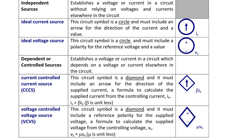Voltage controlled voltage source or VCVS. This circuit symbol is a diamond and it must include a reference polarity for the supplied voltage. A formula to calculate the supplied voltage from the controlling variable VX is alpha VX, and its gain is mu, which is unitless.